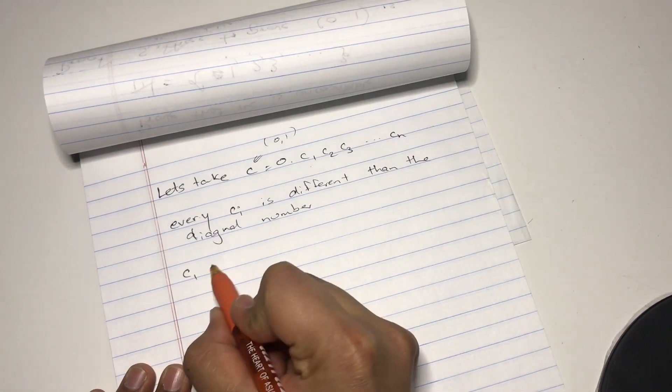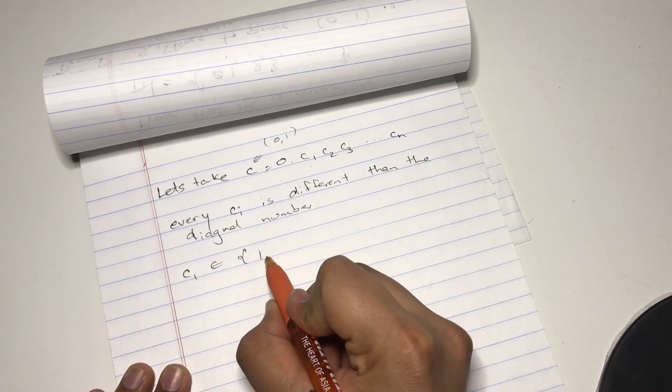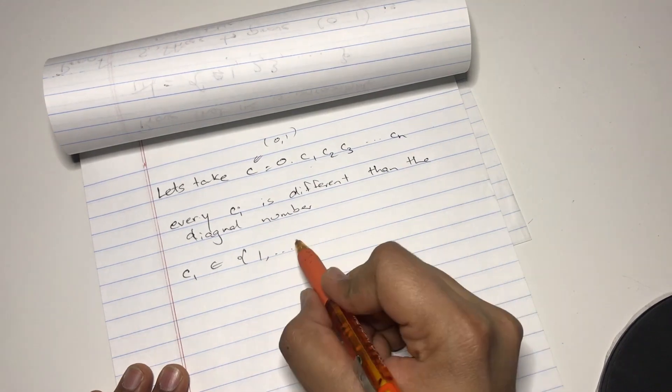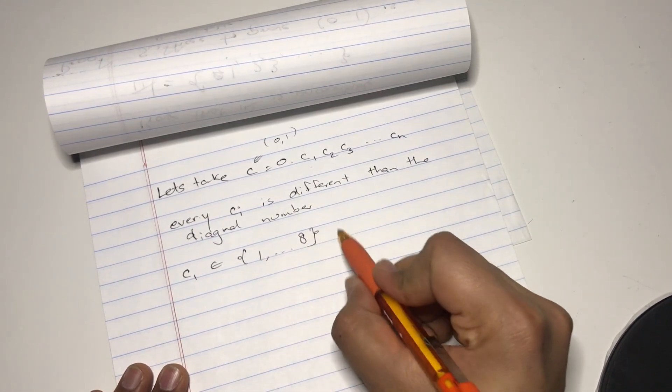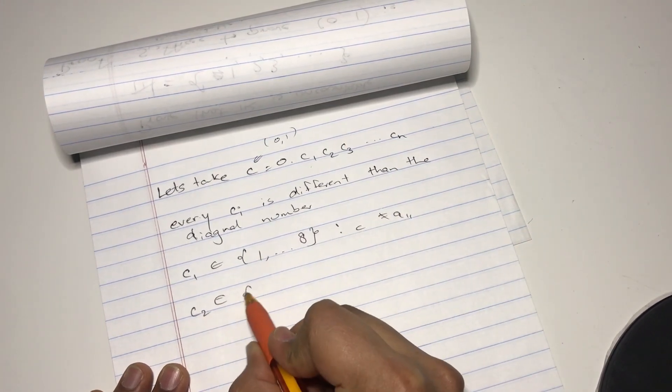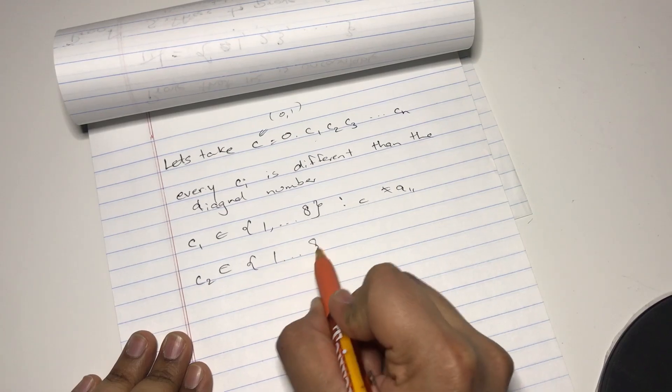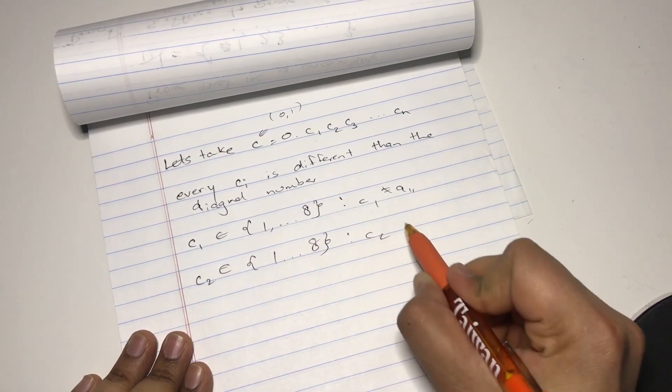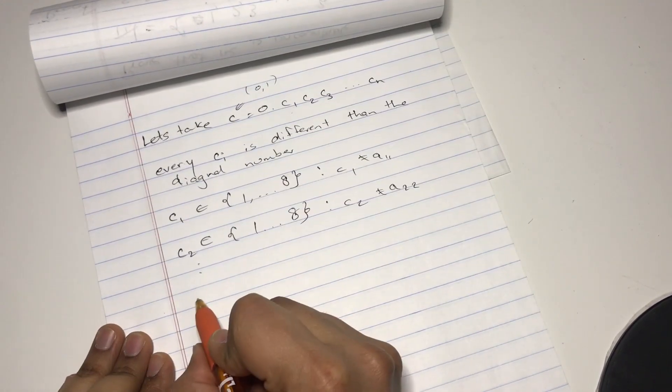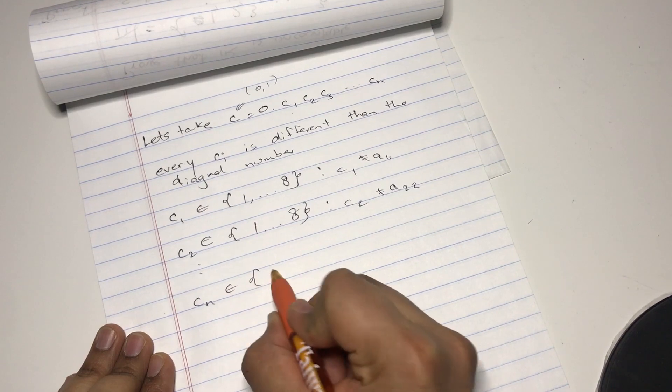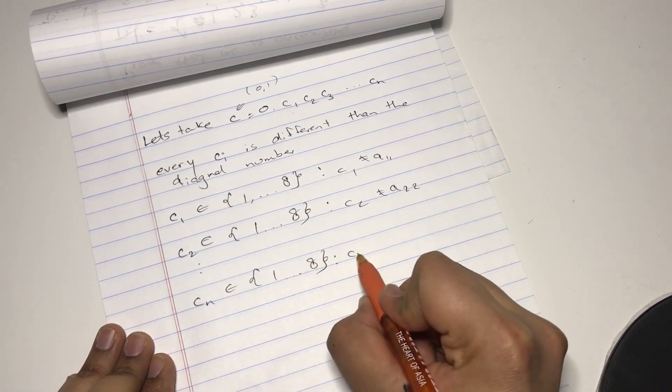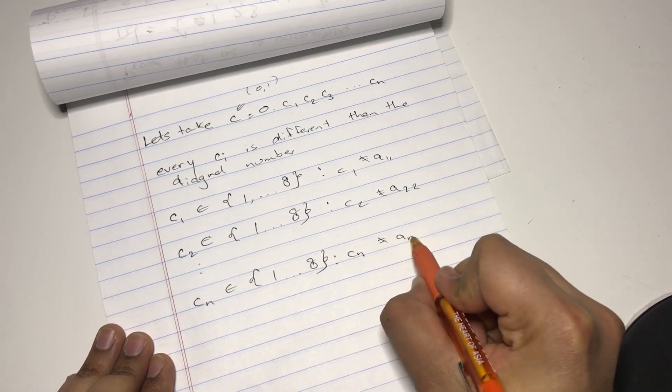Basically, c1 is not equal to a11, c2 is not equal to a22, cn is not equal to ann, and so on. So we have c1 that belongs to the set of between 1 all the way to 8, such that c does not equal a11. C2, same thing, 1 to 8, c2 does not belong to a22. And cn belongs to 1 to 8, such that cn is not ann.